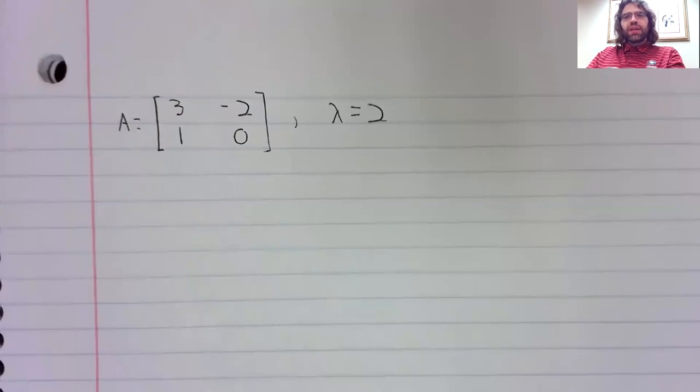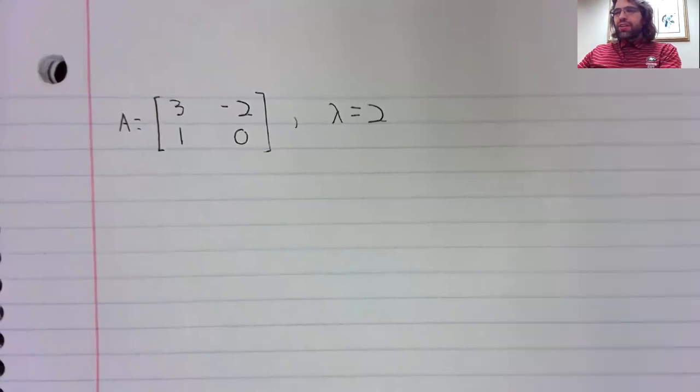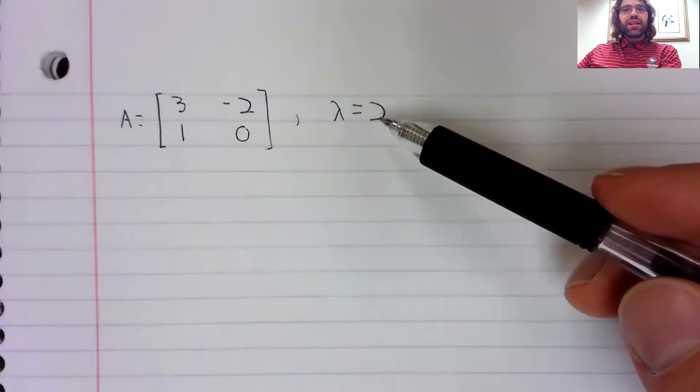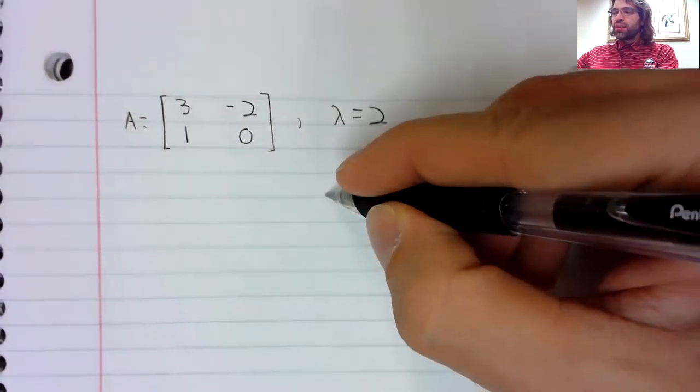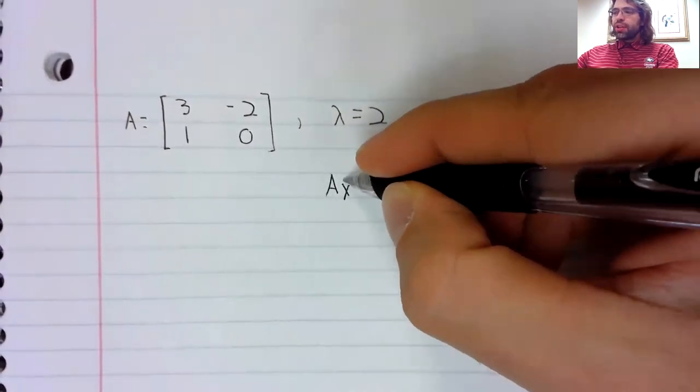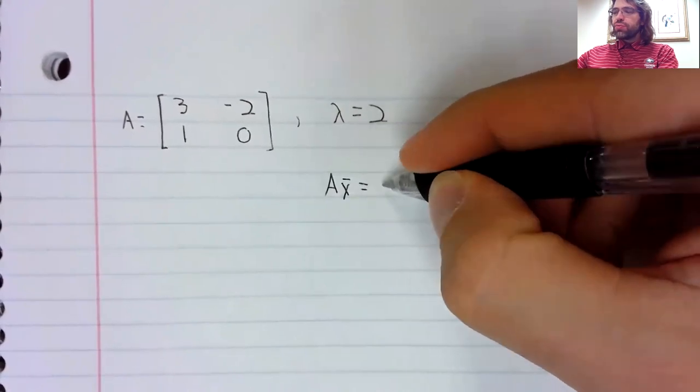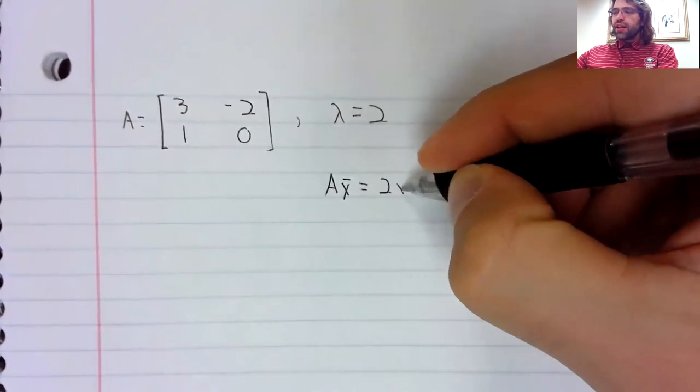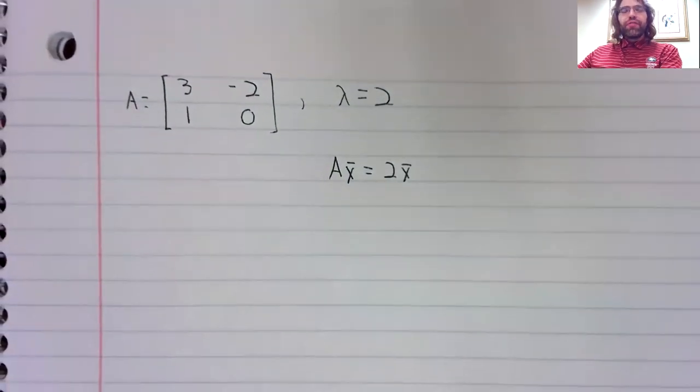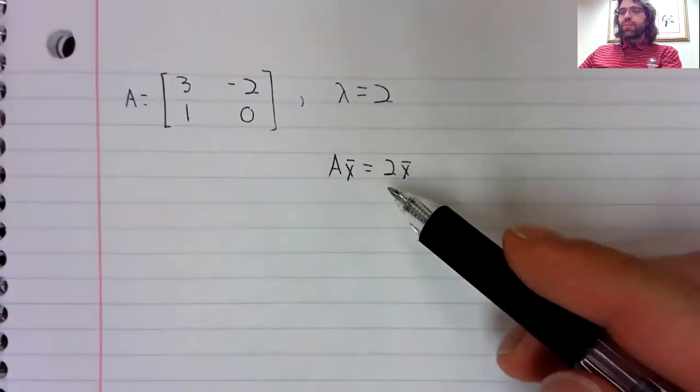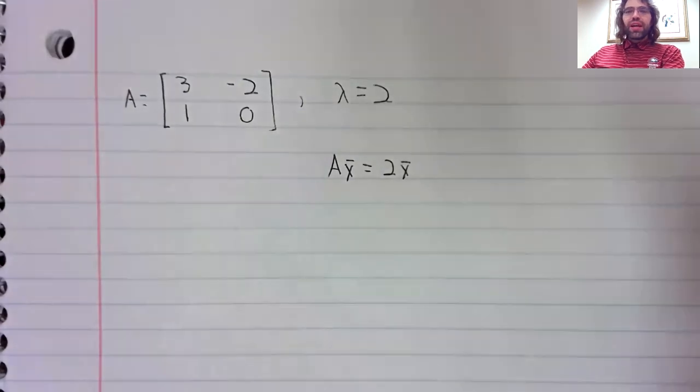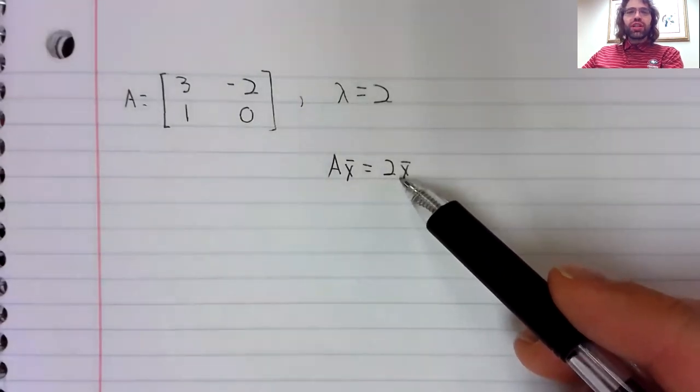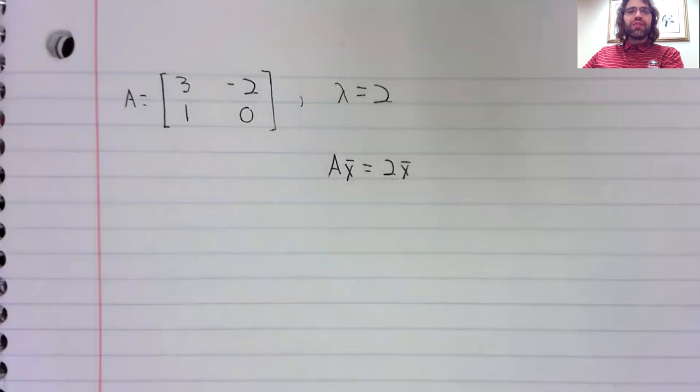Here's a matrix and an eigenvalue of the matrix. And the way we're going to see that this is an eigenvalue is to find eigenvectors. Lambda equals two is an eigenvalue if and only if this equation has nontrivial solutions. And the nontrivial solutions are the eigenvectors.